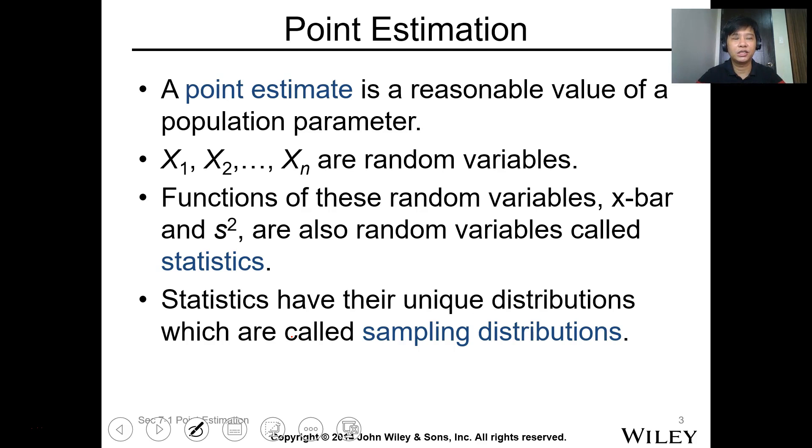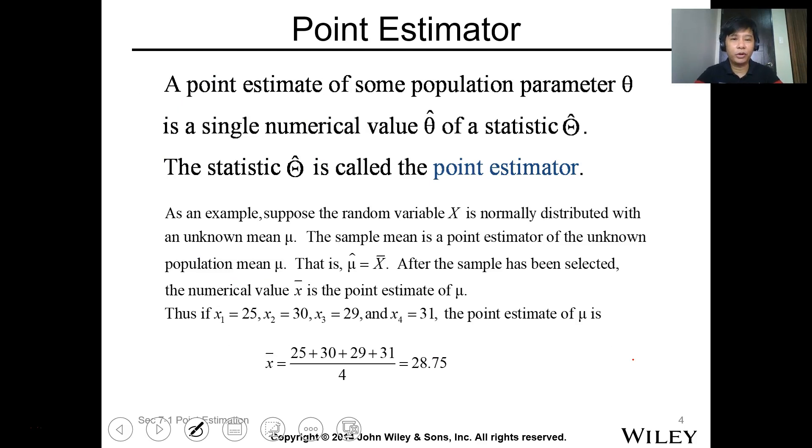When you say point estimation, this one is just an estimation of your population parameter. When you say population parameter, these are the data describing a population. And from the population, you collect random variables, which we represent x with its subscript, we have n samples. And these random variables of the sample from the population, we call the data of this sample statistics, which represent the mean value as x bar and the variance as s squared. So the unique distribution point estimation or statistics or the sample data is what we call the sampling distribution.